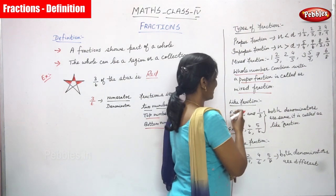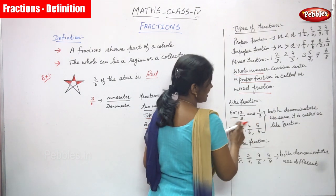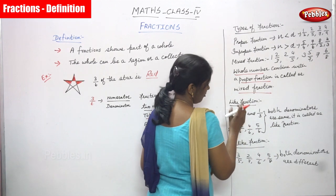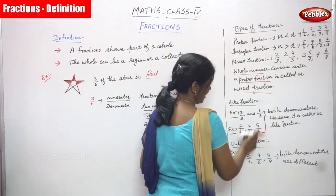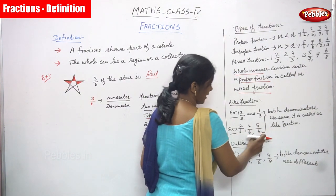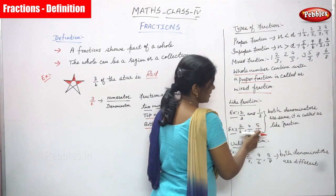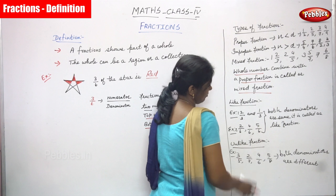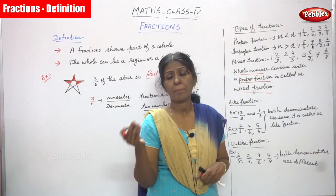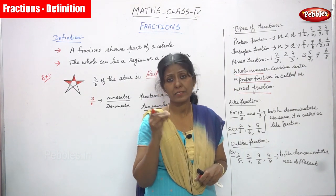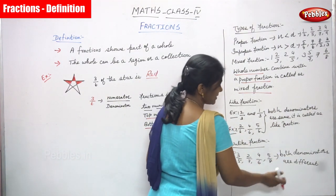Now we are going to see like fractions. Like fractions means the denominators are the same but numerators are different. For example: 2 by 3 and 1 by 3 — both denominators are 3, so they are like fractions. Also 2 by 6, 4 by 6, 5 by 6 — all three have the same denominator 6. Denominators are always the same in like fractions, no matter how many fractions are given.